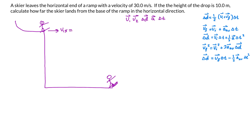In the x direction the velocity is given to us as 30 meters per second. In the y direction, because the skier leaves the horizontal end of the ramp, as they're coming down they go horizontal and then due to gravity they start dropping. So initially in the y direction they have no velocity — they are not pushing up or down — so we're going to label v1y as 0 meters per second.